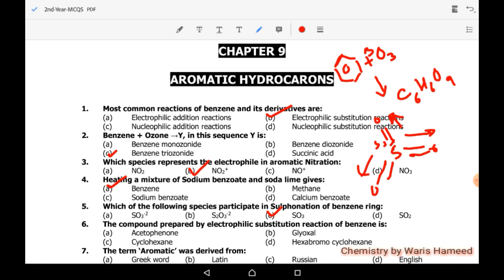The compound prepared by electrophilic substitution reaction of benzene is acetophenone. Acetophenone is benzene ring having acyl group CH3, and all others are actually addition products of benzene. Now going to MCQs number seven.